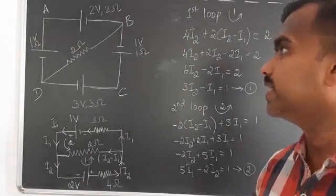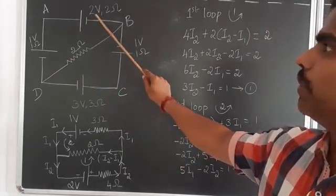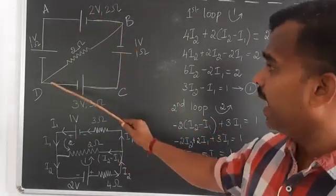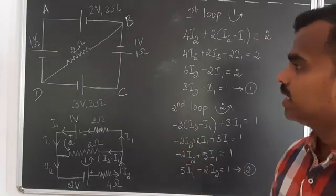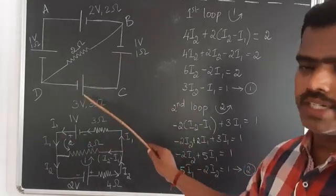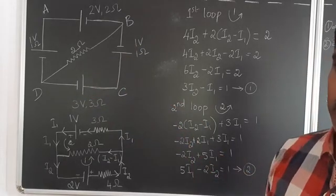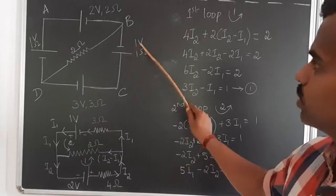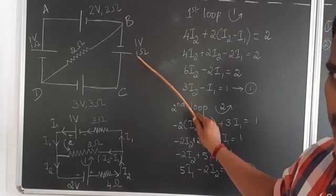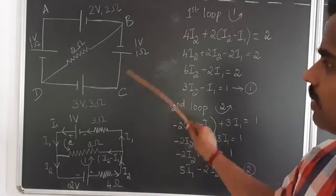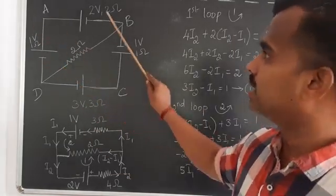We have a 1 volt battery with 1 ohm internal resistance, a 2 volt battery with 2 ohm resistance, a 3 volt battery with 3 ohm resistance, and a 1 volt battery with 1 ohm resistance. The 3 volt and 1 volt batteries are connected in series with opposing polarity, so 3 minus 1 gives 2 volts, and 3 plus 1 gives 4 ohms.